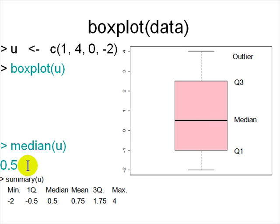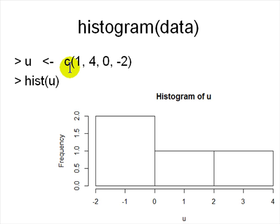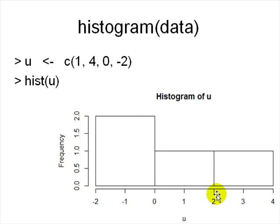The median is 0.5 on the box plot, and summary(u) tells you where Q1 and Q3 are. Another common visualization is the histogram: 'hist(u)' shows how many values fall in each range — between -2 and 0 there are two elements, one element between 0 and 2, one at 4. With a small dataset it's not clear, but with larger data it becomes much clearer.